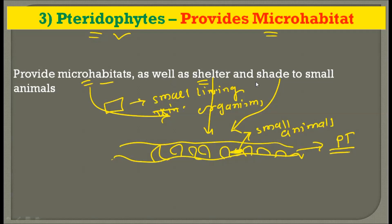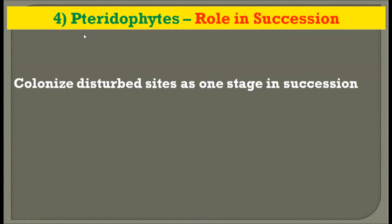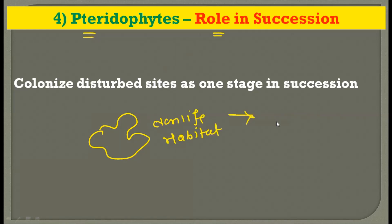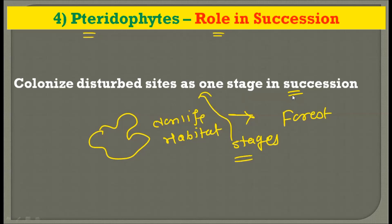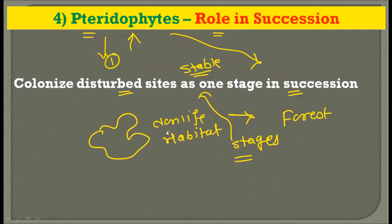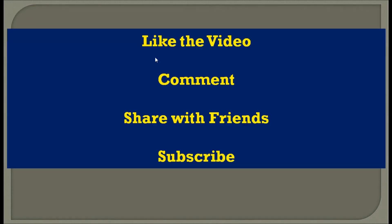The fourth ecological application of pteridophytes is their role in succession — the step-by-step process by which bare rock or non-living habitat is converted into a forest. One stage in this succession belongs to pteridophytic plants, because these plants can survive in disturbed conditions and transform disturbed habitats into stable communities. Thus, pteridophytes play a very important role in converting non-living habitats into forest.